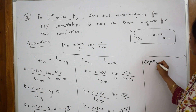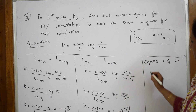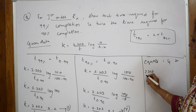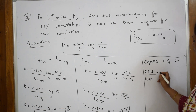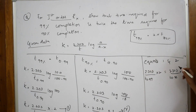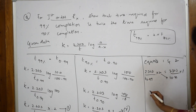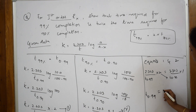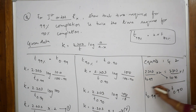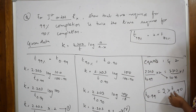Now equate equation 1 and equation 2, because we need to find their ratio. So: 2.303 by t(0.99) into 2 equals 2.303 by t(0.90) into 1. The 2.303 terms cancel. Cross multiplying, we get t(0.99) equals 2 into t(0.90). Hence proved — the time for 99% completion is twice the time for 90% completion.